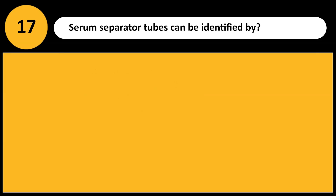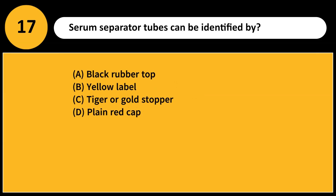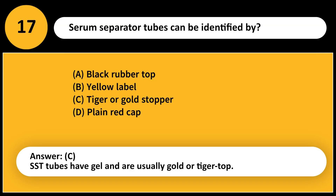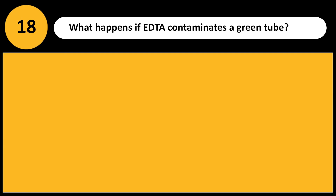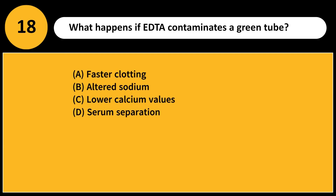Serum separator tubes can be identified by? A. Black rubber top. B. Yellow label. C. Tiger or gold stopper. D. Plain red cap. Answer: C. SST tubes have gel and are usually gold or tiger top.